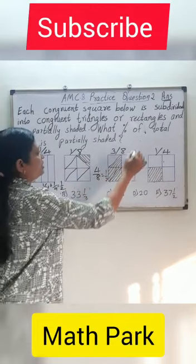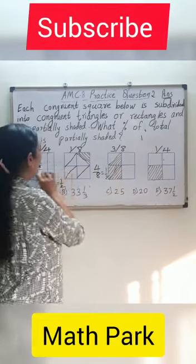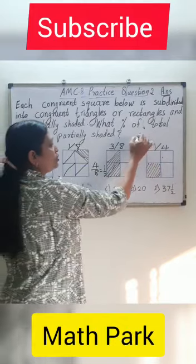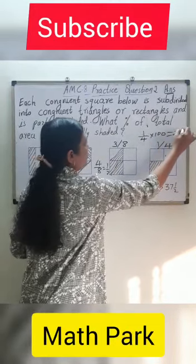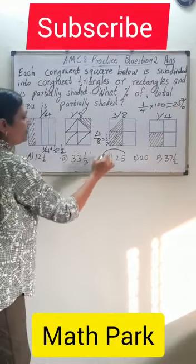And half plus half, the shaded is 1. And 1 square out of 4 squares, so 1/4, if I convert into percentage, it is 25%. Shaded is 25%.